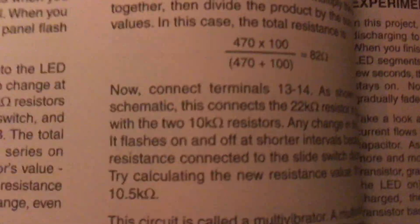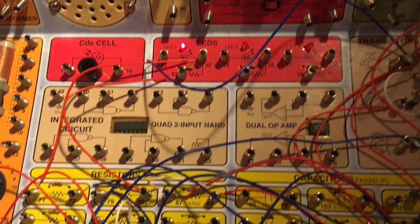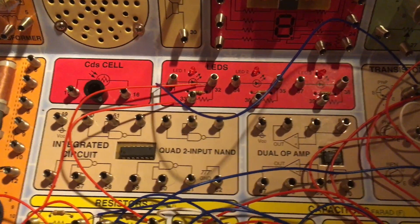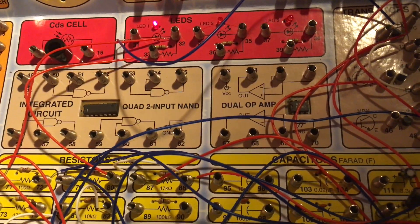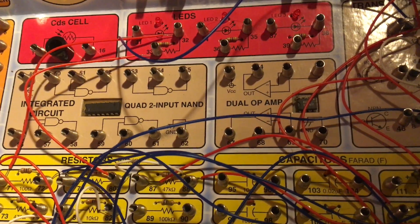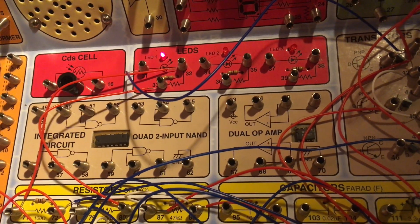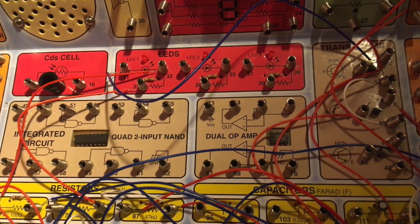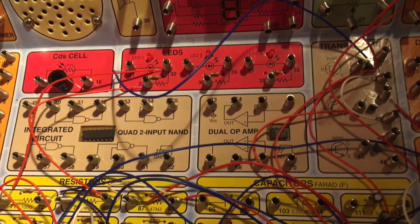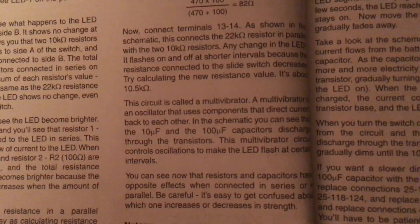Now I'm going to connect terminals 13 through 14. The LED blinks faster. Now the 22,000 ohm resistor is connected in parallel with the two 10,000 ohm resistors and as a result the resistance connected to the slide switch decreases, and so that is why the LED flashes at a higher rate.